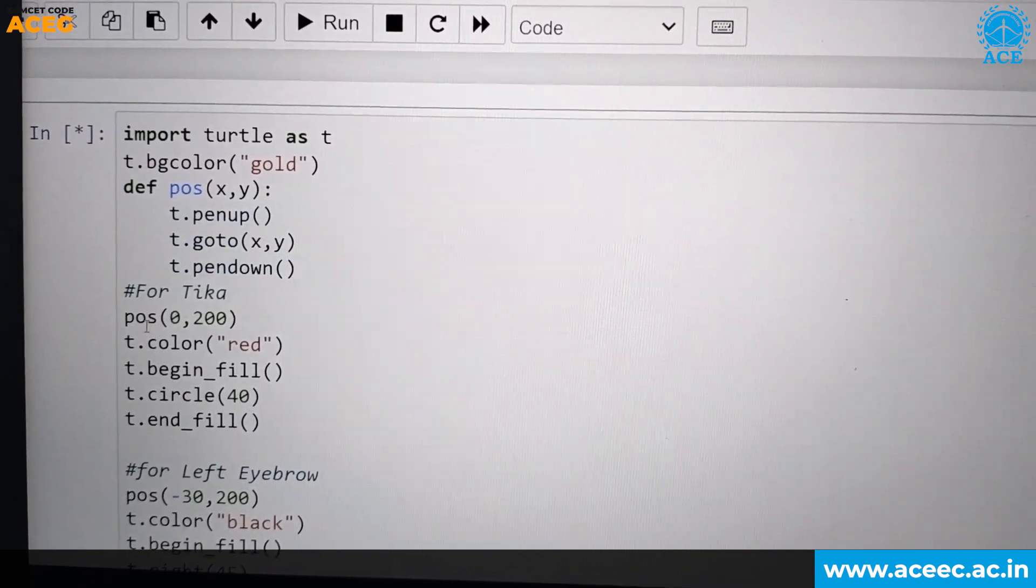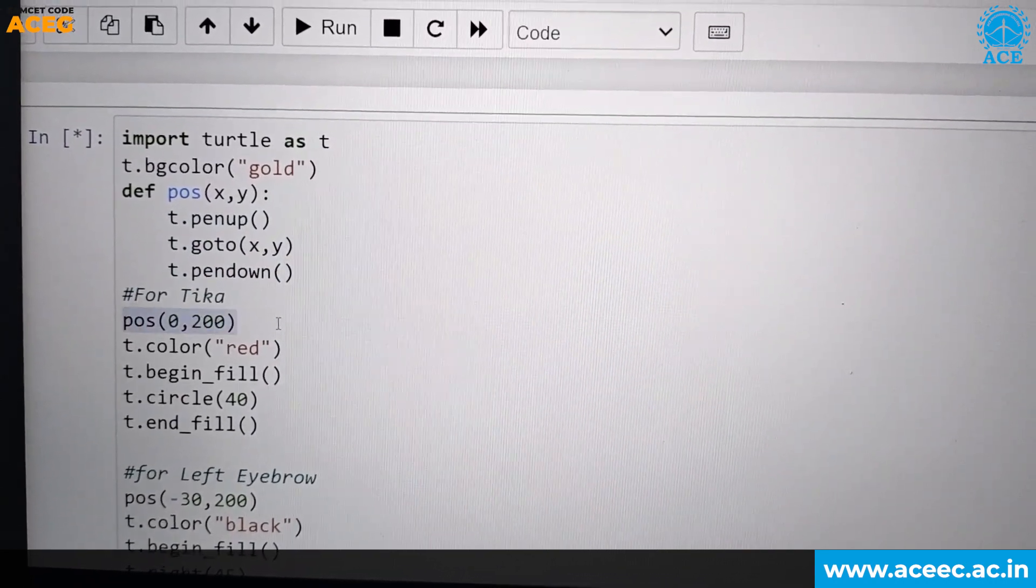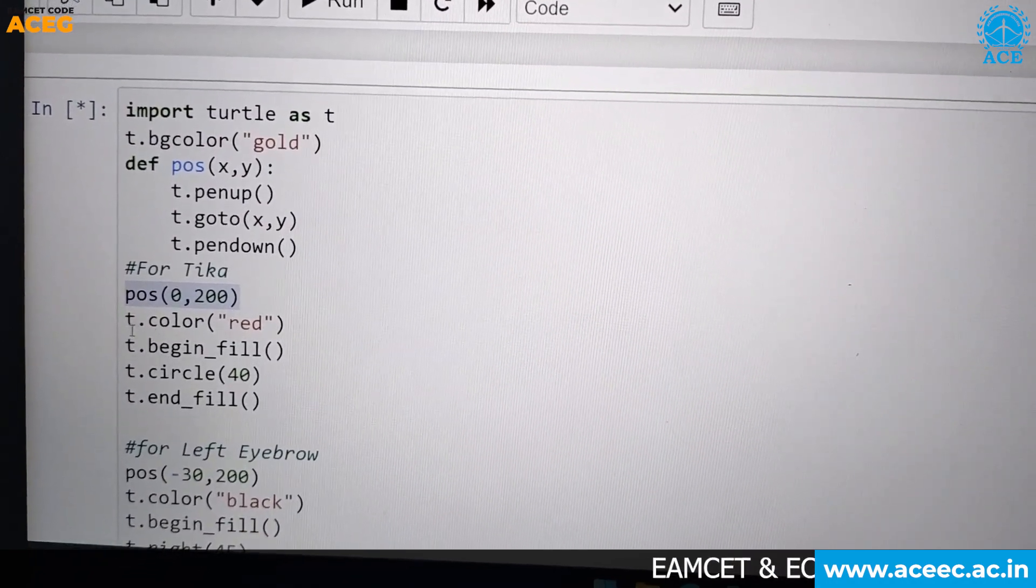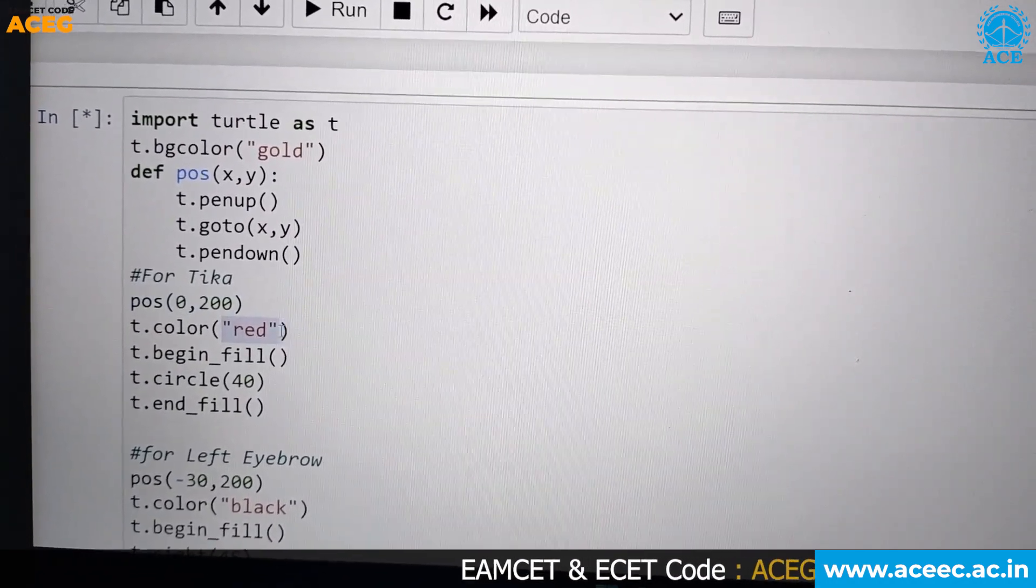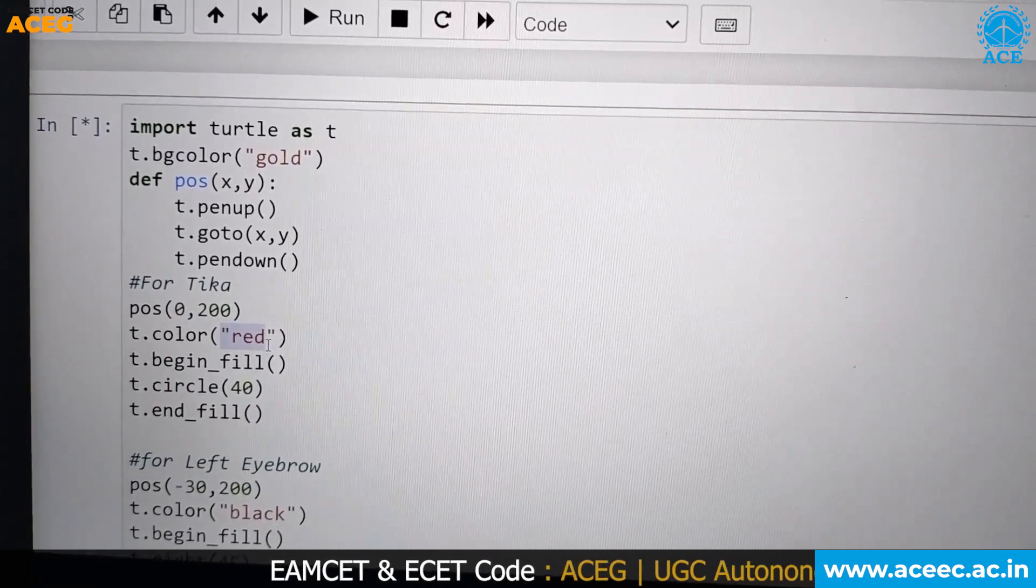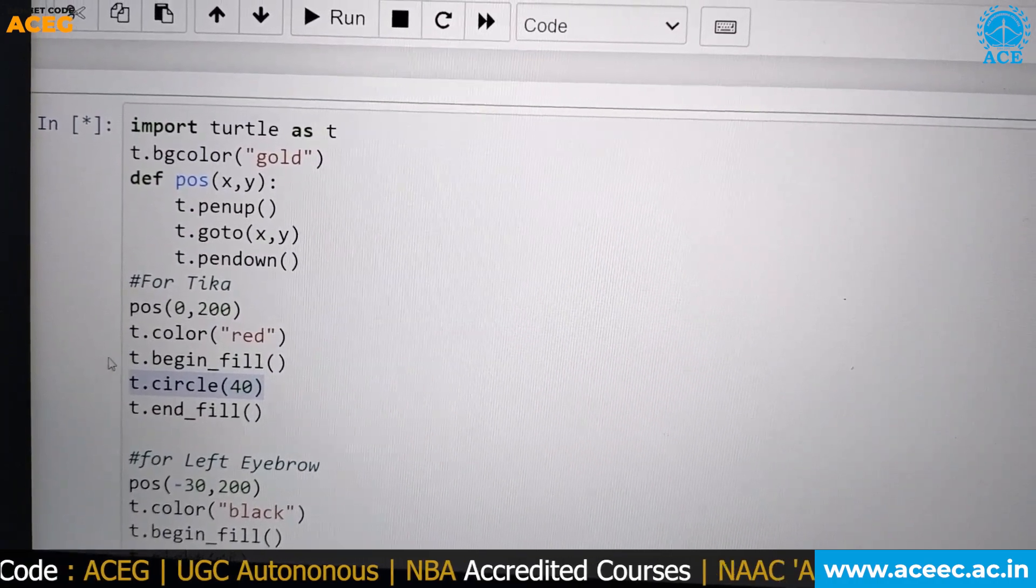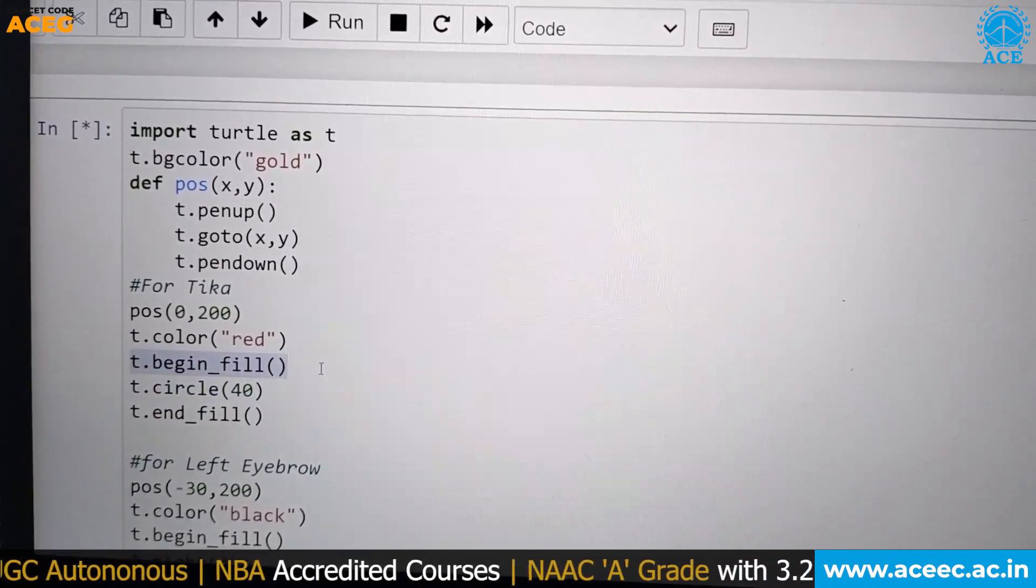Coming to Bindi part, we define position 0,200, which is starting from left to right. We define the color, which is red. So Bindi part will be red color. Next we define the circle is 40, which is the radius. The circle will be filled with the red color.